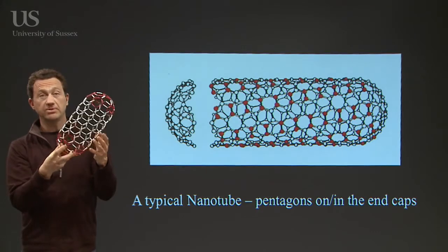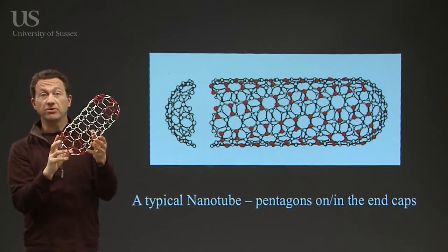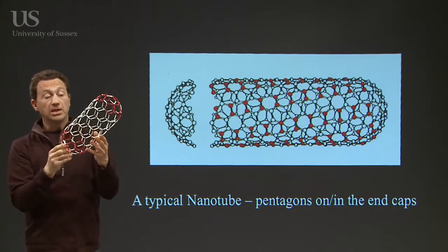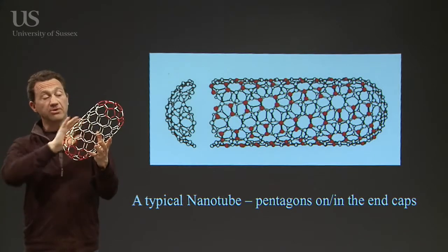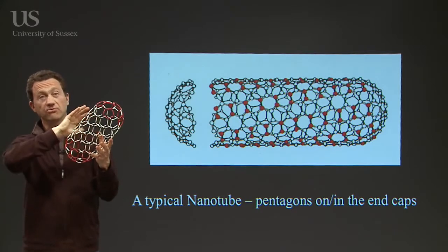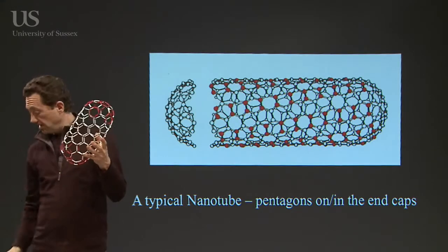You can actually make them in very similar equipment that you use for making fullerenes. Basically what's happening is that a graphite sheet is sort of wrapping up to form this tube.